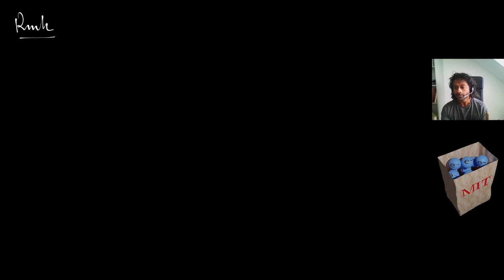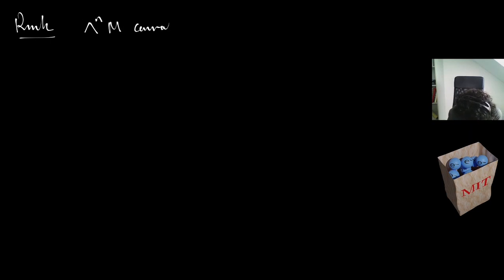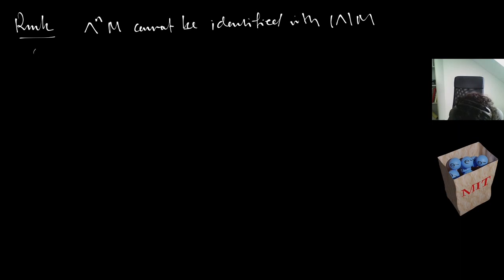A remark: you might think, why not just use differential forms? The density bundle and the top-level differential forms can be identified, but only under the assumption of orientability. In a general context — without assuming orientability — one gets a density bundle. So the density bundle |Λ|M cannot be identified with Λ^n(T*M) unless M is orientable.